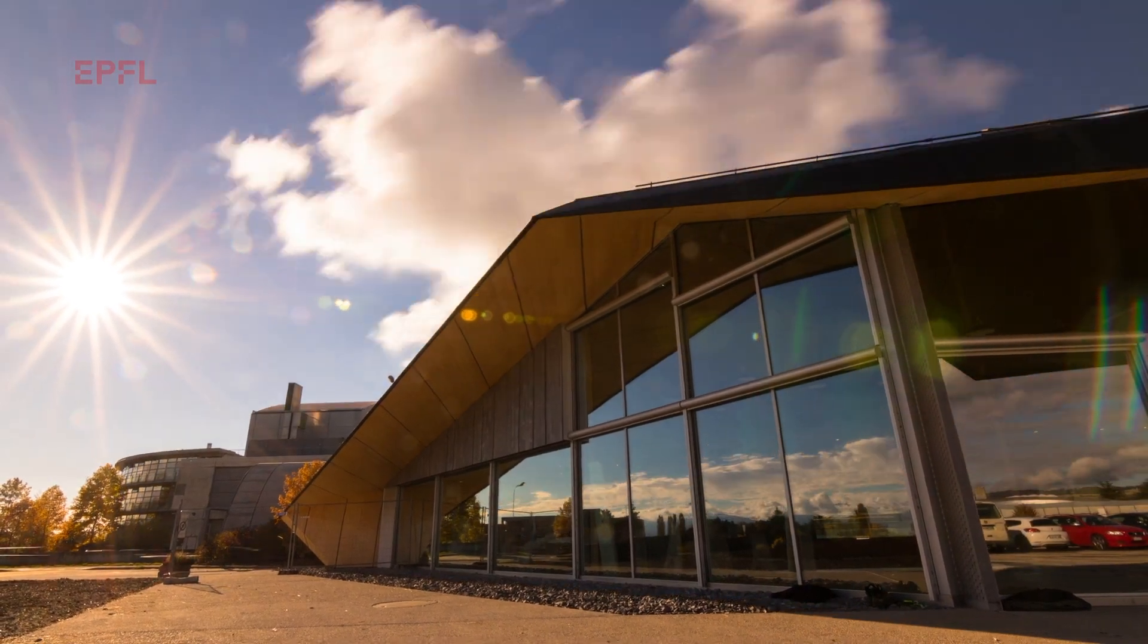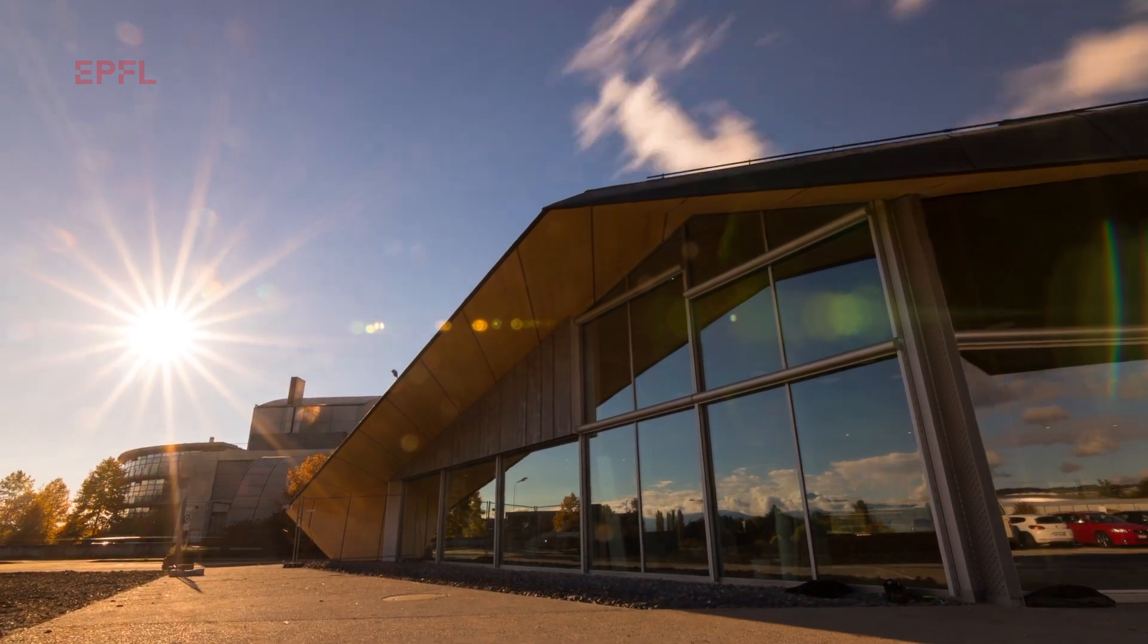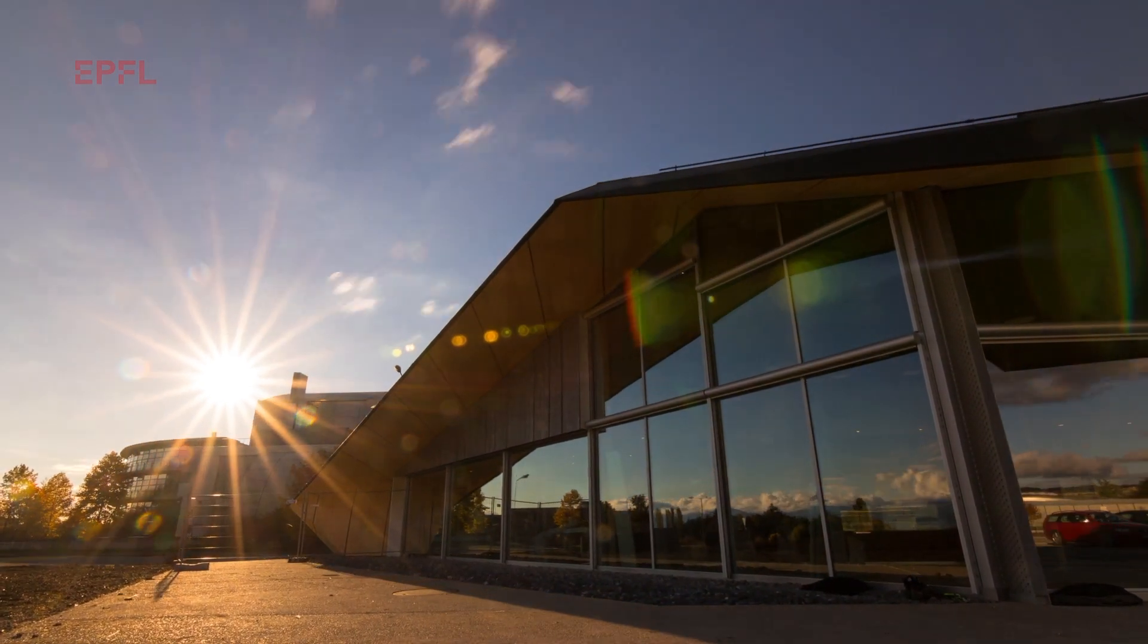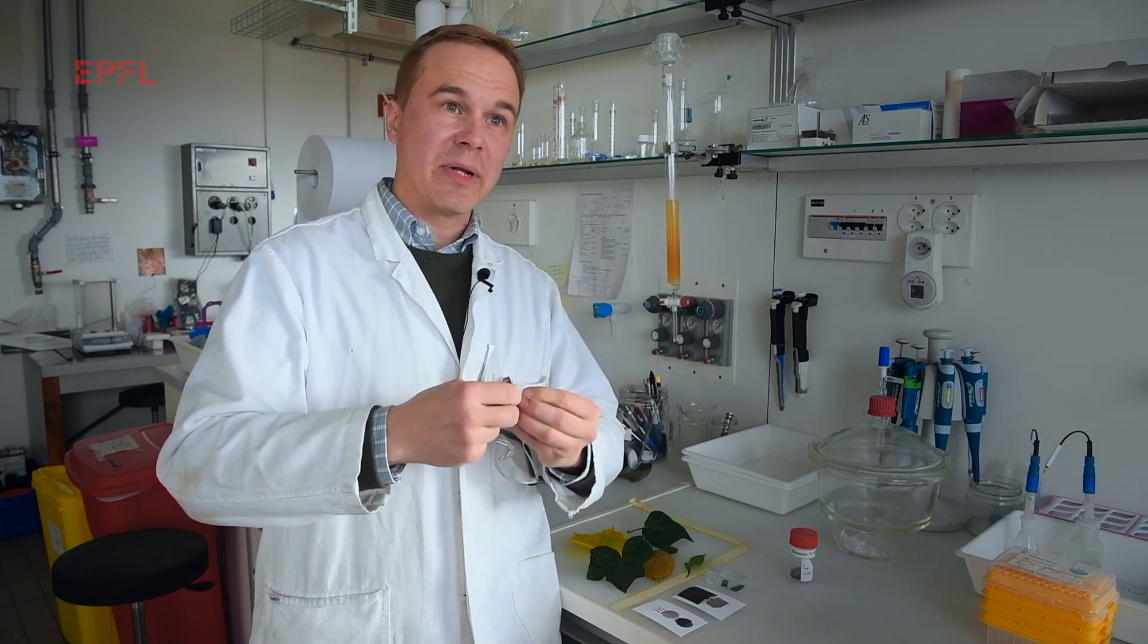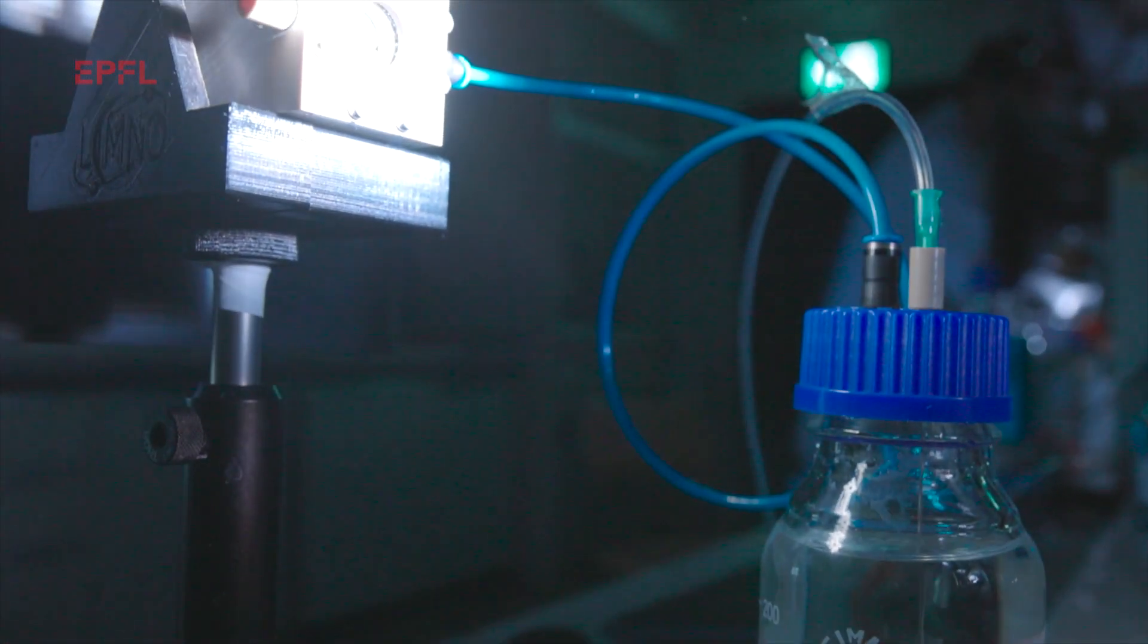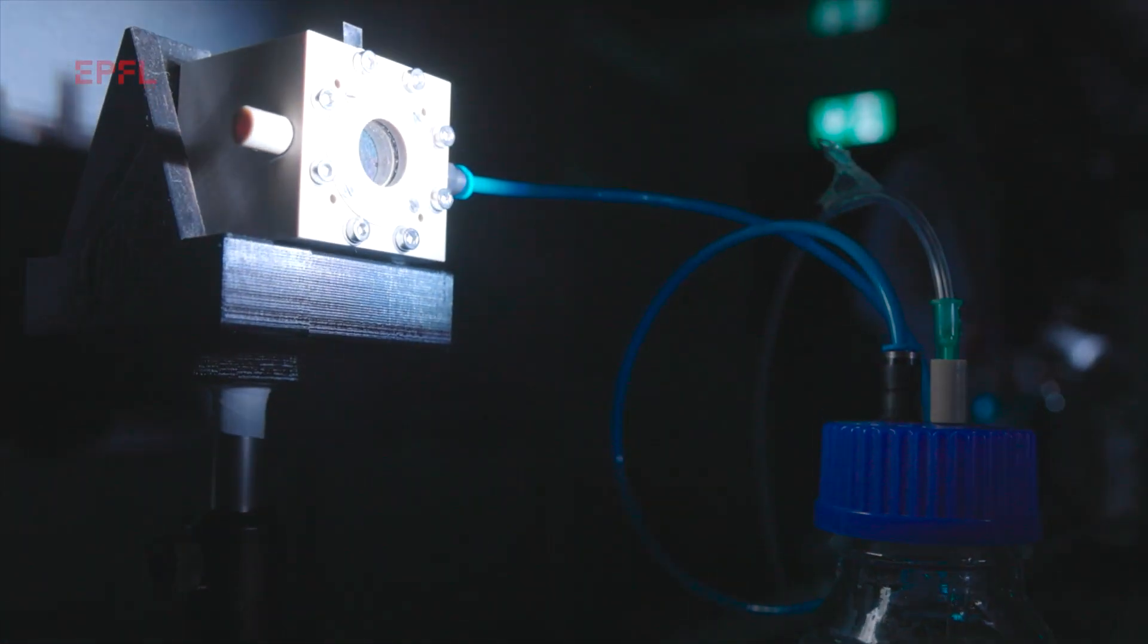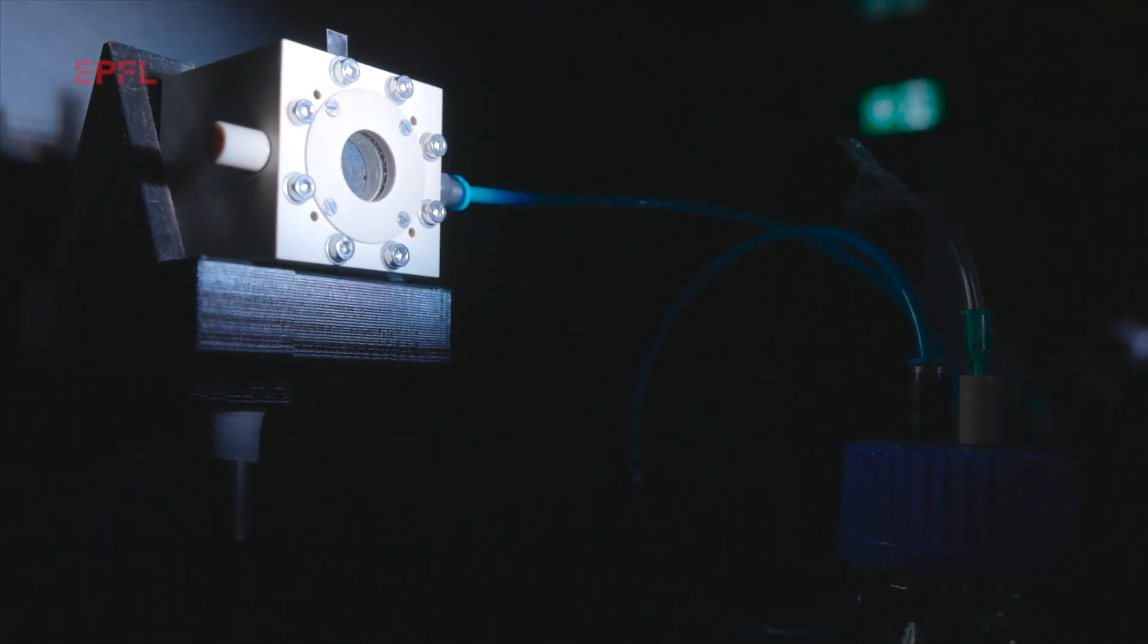This is really important because there's a lot of sunlight available, but the sun doesn't shine all of the time. So we need a way to store the sunlight for future use, and using sunlight to split water into hydrogen and oxygen, storing the sunlight in the form of hydrogen, is a leading method to do this.